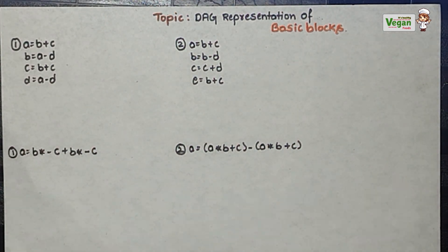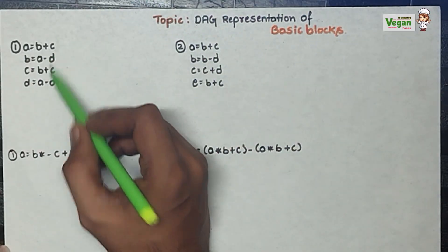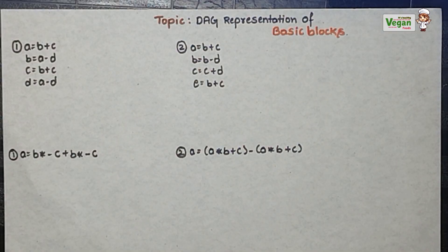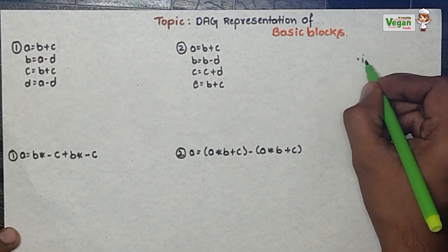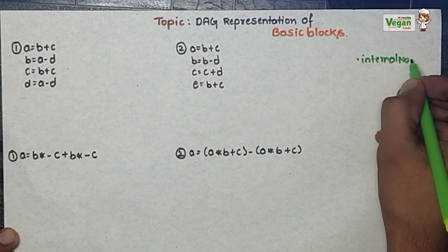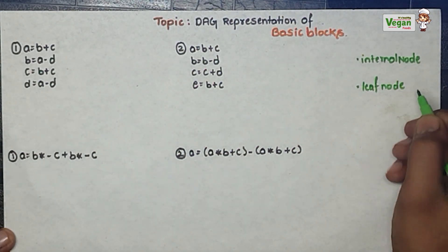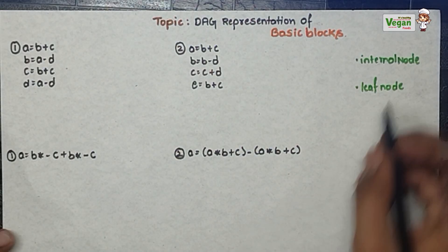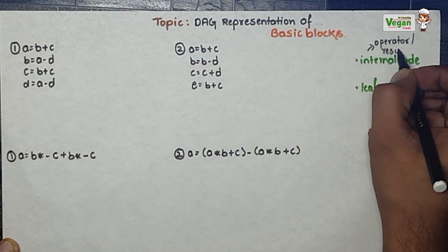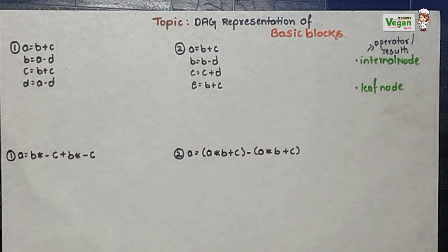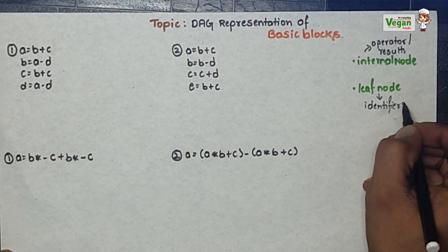These blocks — one, two, three, four — will be called basic blocks, which will be executed in a sequence. In the DAG representation of basic blocks there are two parts: internal nodes and leaf nodes. Internal nodes will be having operators or the result of the expression. Leaf nodes will be having identifiers or constants.